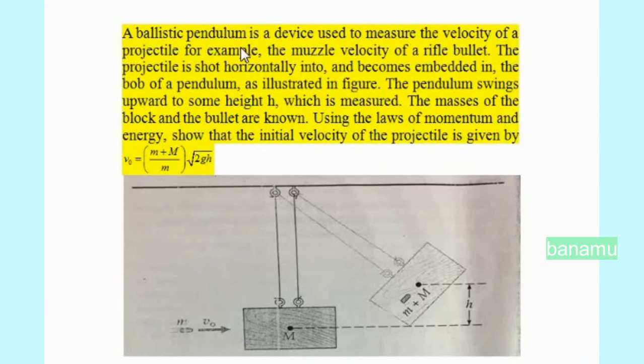A ballistic pendulum is a device used to measure the velocity of a projectile, for example, the muzzle velocity of a rifle bullet. The projectile is shot horizontally into and becomes embedded in the bob of a pendulum.